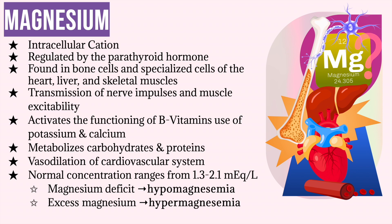Magnesium has many functions. It assists with the transmission of nerve impulses and muscle excitability. Magnesium activates the functioning of B vitamins, potassium, calcium, as well as several enzyme systems, and helps with the metabolizing of carbohydrates and proteins. Magnesium also acts on the cardiovascular system by causing vasodilation.